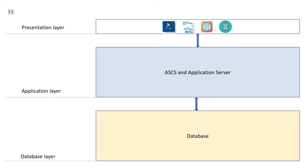First let's take a look at the high-level architecture. On a high level you can divide the architecture of an SAP system into three layers. The first one is the presentation layer, where users use channels like SAP Logon Pad, SAP Business Client, Fiori, web browser, or any mobile apps to access an SAP system.